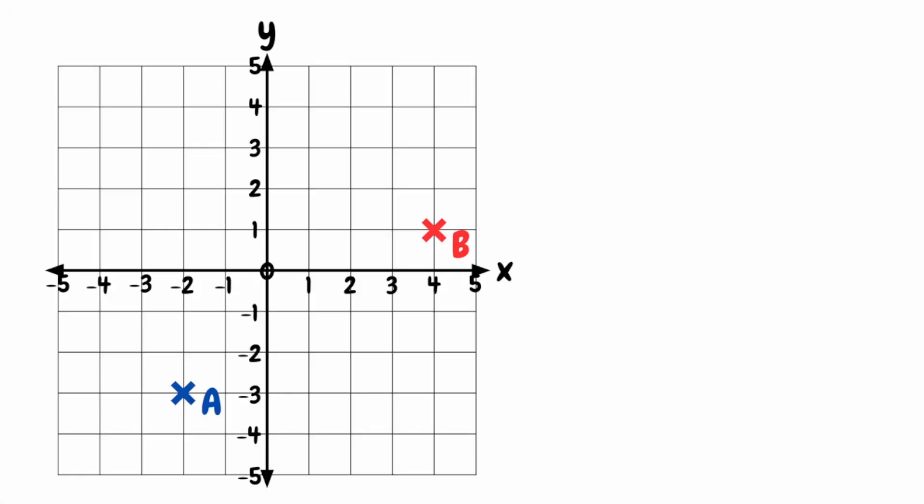In this video, we're going to take a look at how we find the midpoint between two coordinates. So if we take a look at this grid, we've got the points A and B. The coordinates of point A are negative 2, negative 3, and the coordinates of point B are 4, 1.